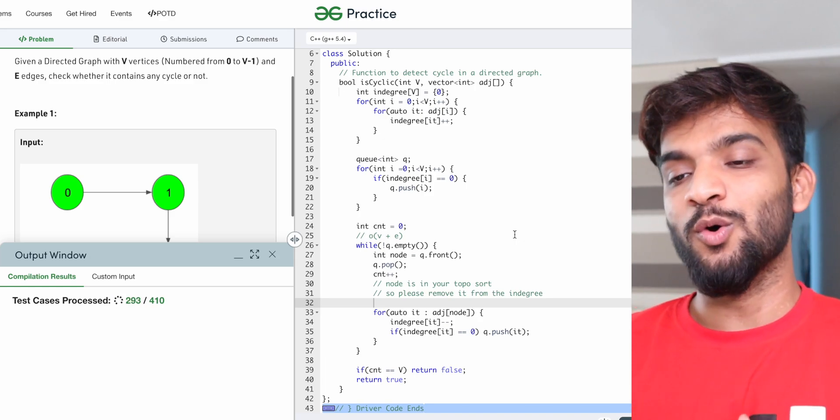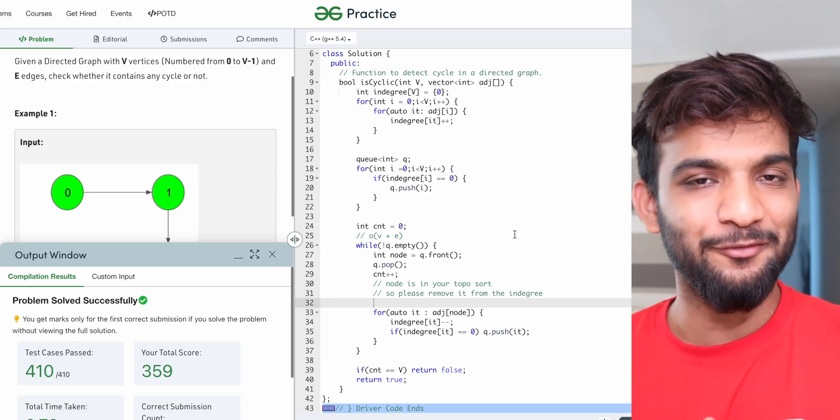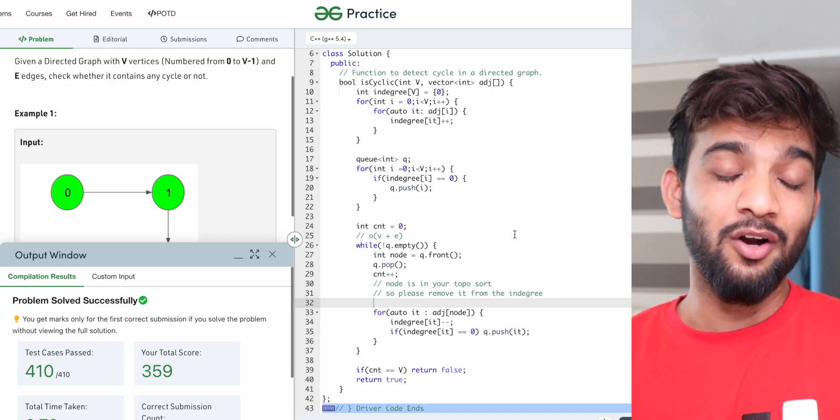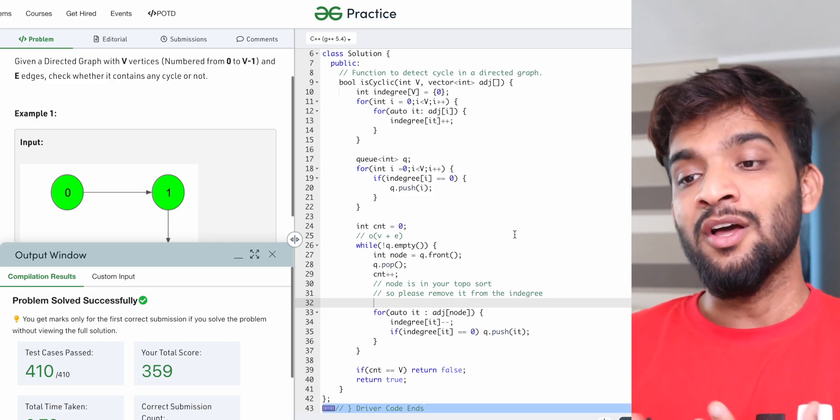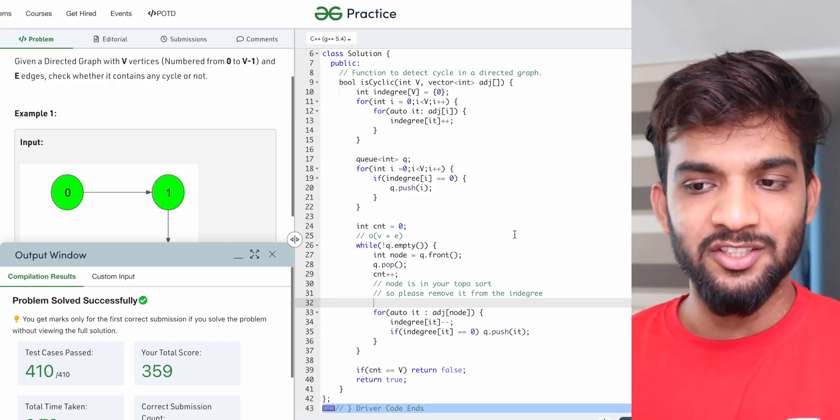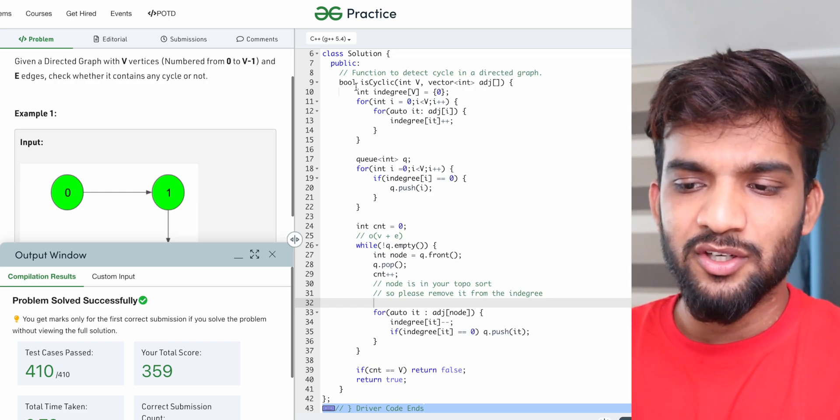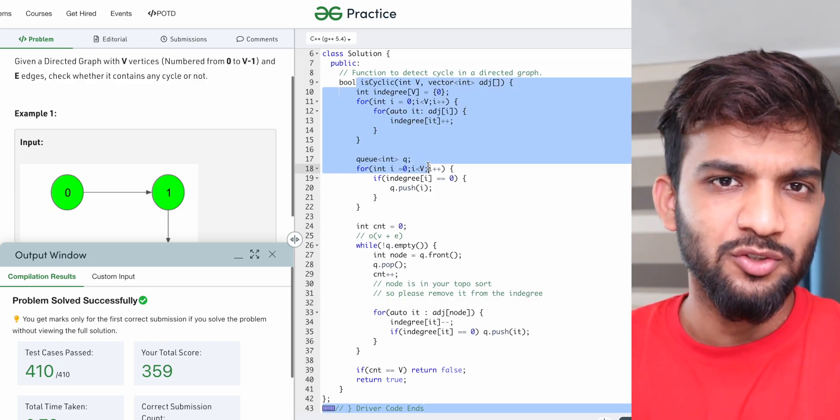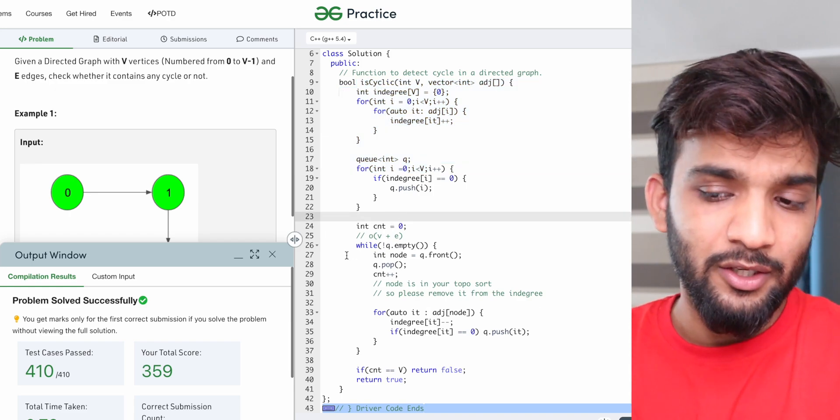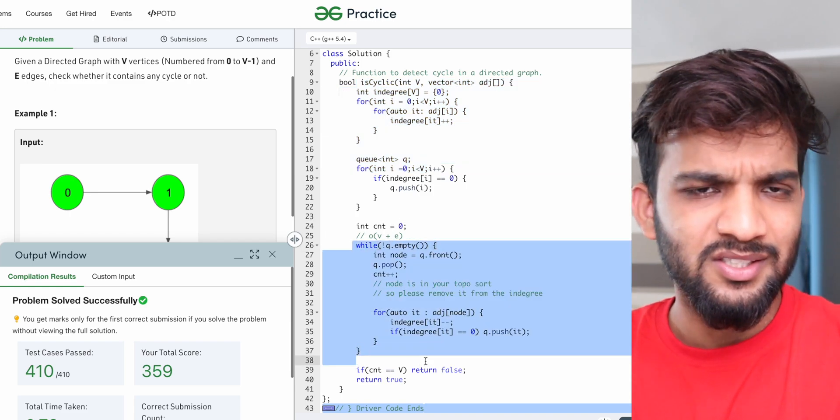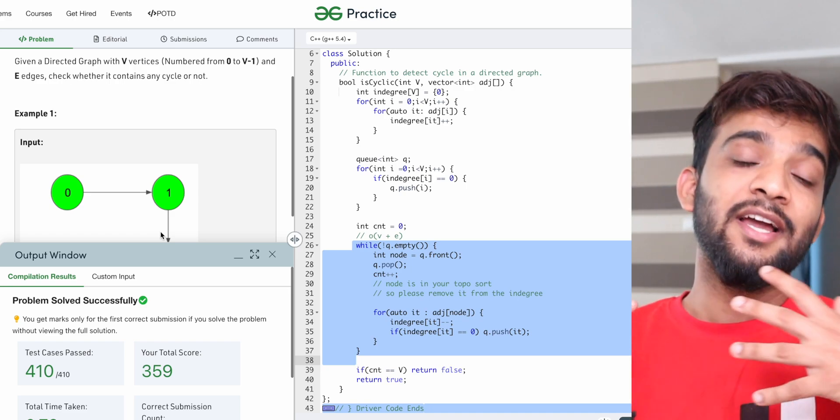So guys, I hope you've understood this wonderful concept being applied on detection of cycle in directed graph. What about this time complexity and the space complexity? It is similar to topo sort. We're using an extra space of a queue and an indegree which is O(2n), and then we are using the BFS algorithm which is V plus E for directed graphs.